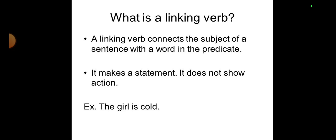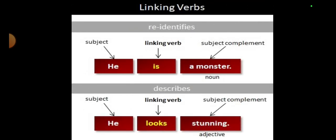Now let me tell you with the help of this slide. We will take an example of the form of 'be' — 'is.' The other kind looks like an action verb but is not performing any sort of action, so it is a linking verb. See: 'He is a monster.' Here 'he' is the subject and 'a monster' is the complement. He is being called a monster. Nowhere is any action being performed, so 'is' here is a linking verb.